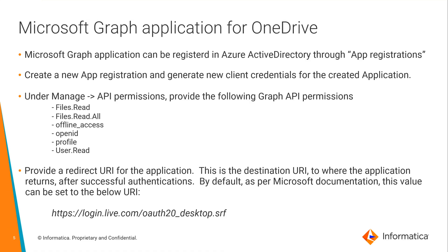Once the app has been created, you need to provide the necessary Graph APIs listed here to the application. In addition to providing those APIs, you will need to provide a redirect URI for the application. This is the destination URI to where the application returns after successful authentication of the user through Graph API tokens. This can be provided with the default value as shown, as per Microsoft documentation.